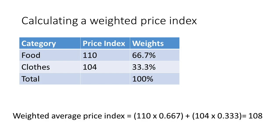The examiner could give you weights in a different format — this time as percentages. Food, being twice the weighting of clothes, is given 66.7% and clothes 33.3%. You're unlikely to have to determine the weights yourself; they'd be given to you. To calculate the weighted price index, multiply the price index by the percentage weighting for each category: 110 times 0.667 plus 104 times 0.333. Adding those together gives the same weighted price index of 108.